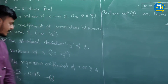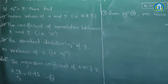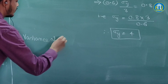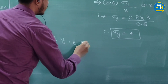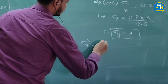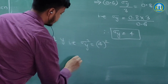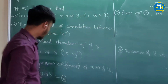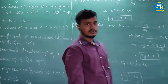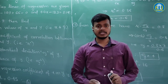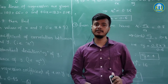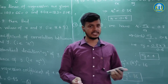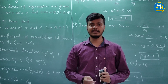The standard deviation sigma y of y is 4, and finally we have to find the variance. The variance of y, sigma y squared, equals 4 squared, which is 16. This completes our fourth requirement. I hope this problem has been understood. Thank you for watching and enjoy learning.